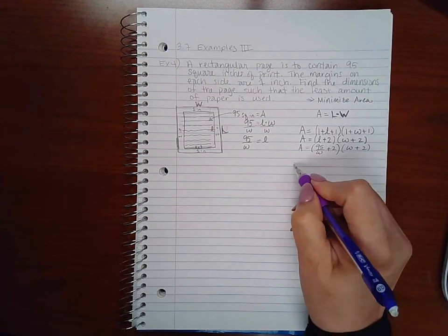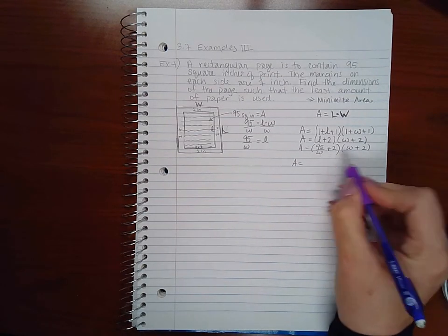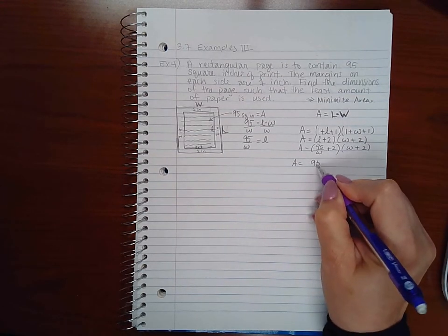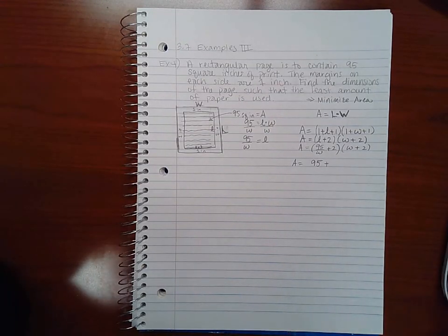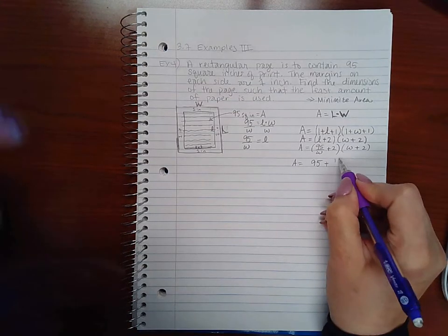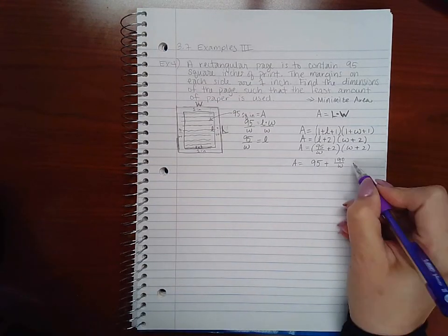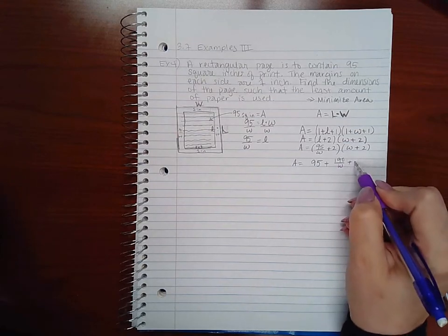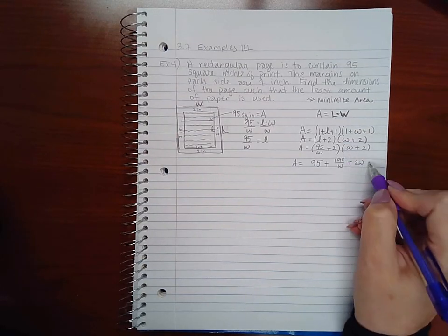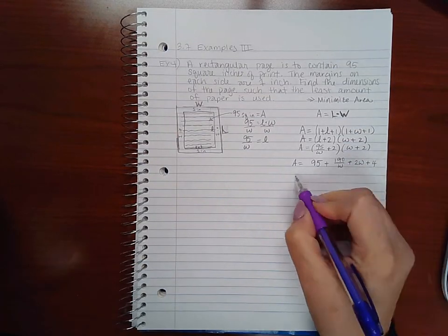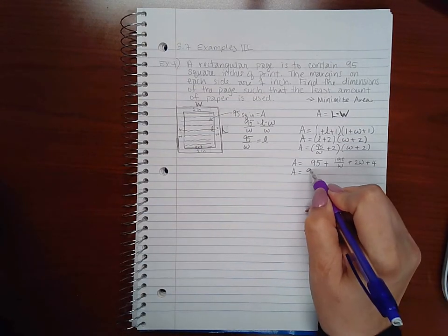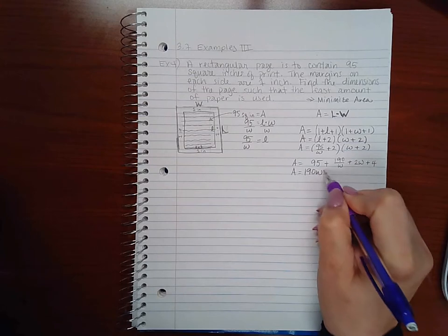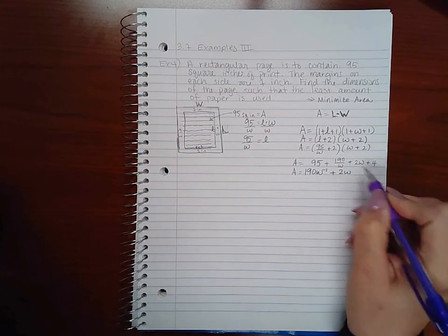And so we can foil this out. 95 over w times w is just 95. 95 over w times 2 is 190 over w. 2 times w is 2w, and then 2 times 2 is 4. So if I simplify this and rewrite it, I will have 190w to the negative 1 plus 2w plus 99.